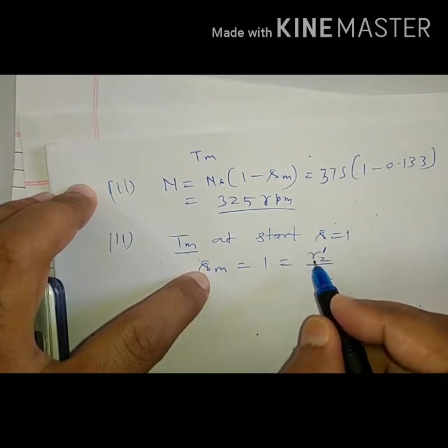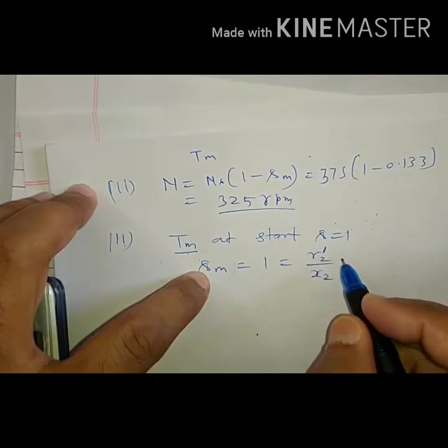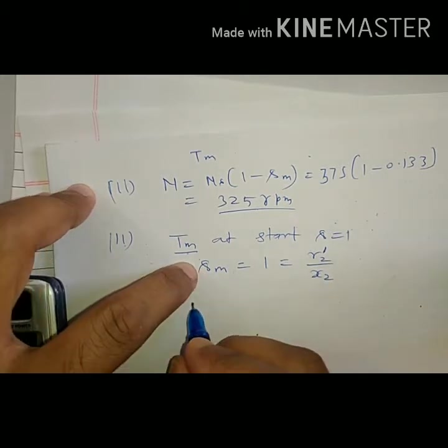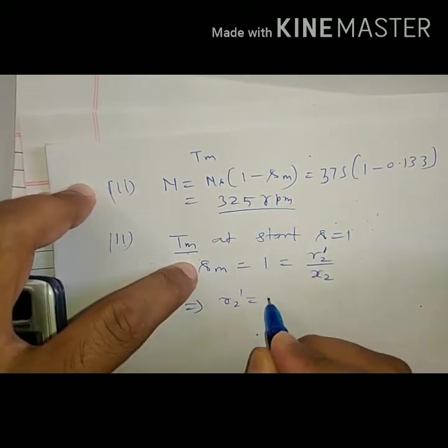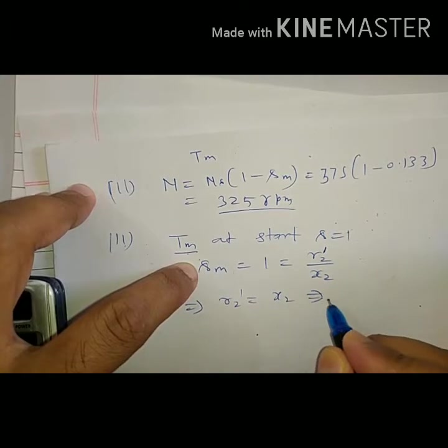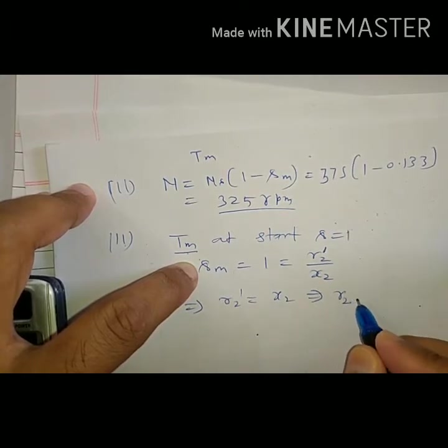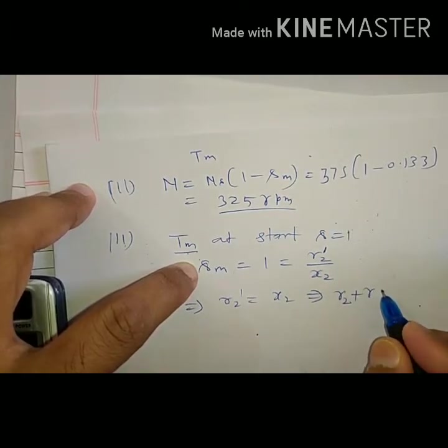When numerator is increased, that means when some resistance is added, R2 dash. Therefore R2 dash is X2. And what is R2 dash? It is original rotor resistance plus some extra resistance added, equal to X2.